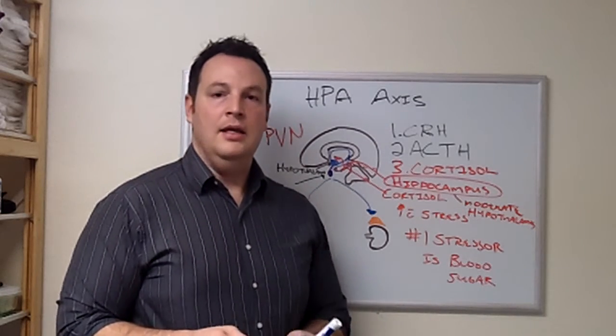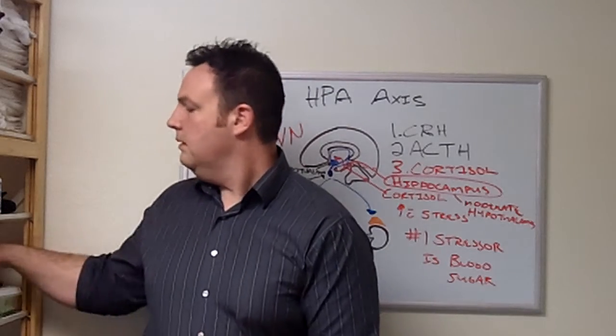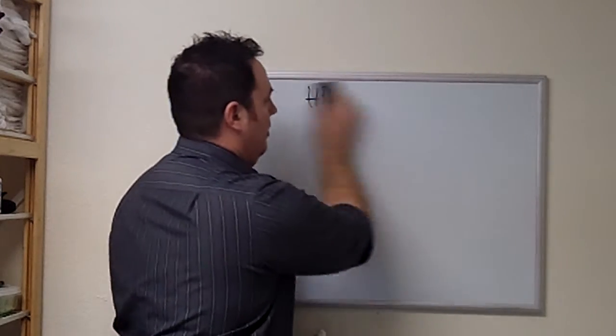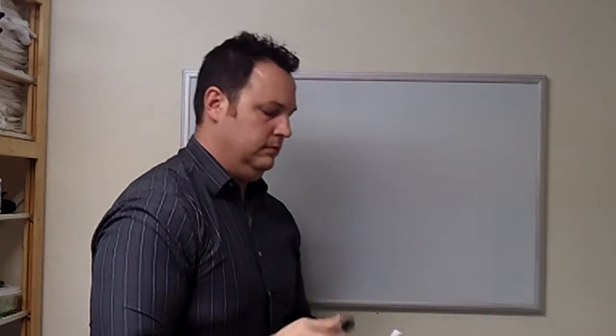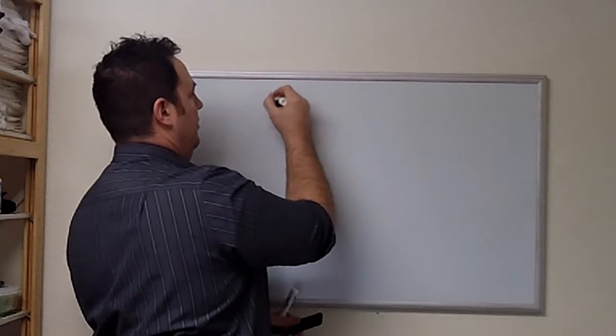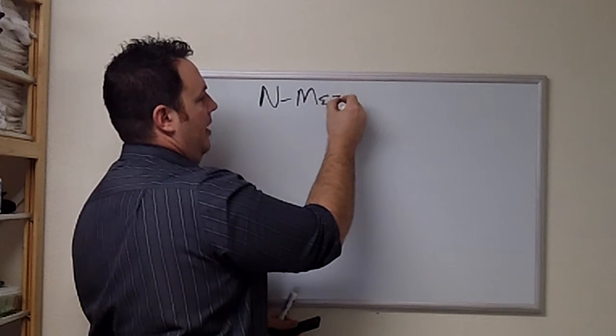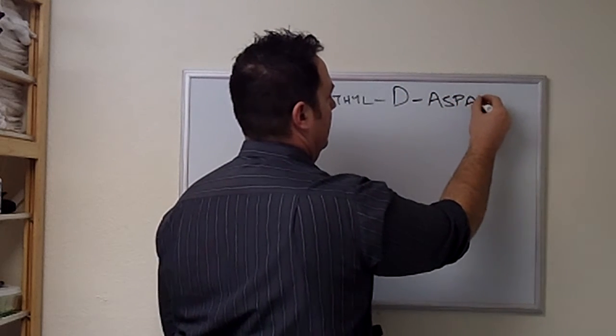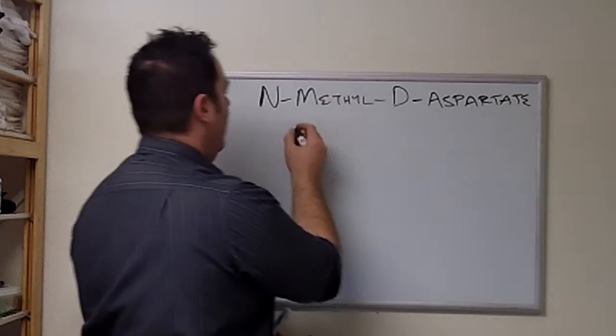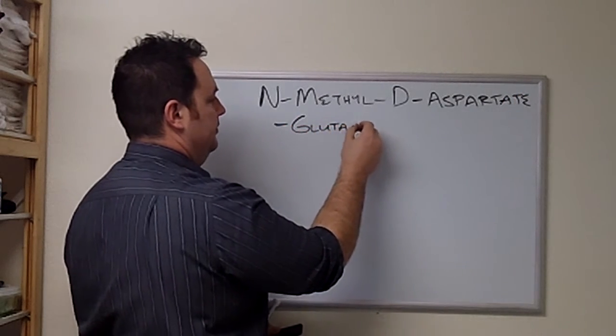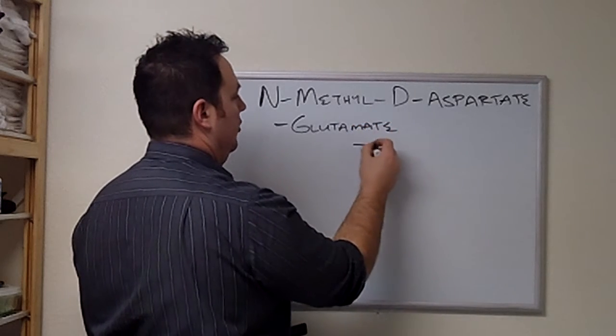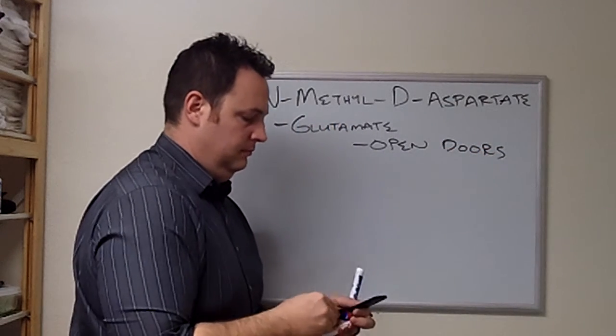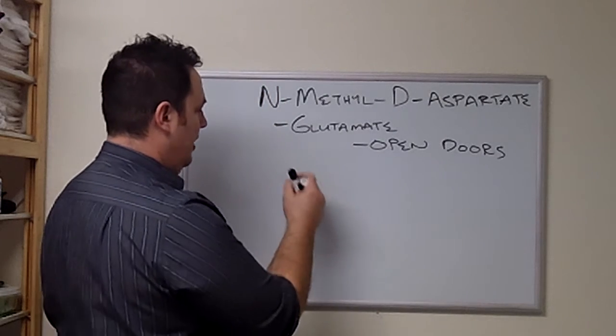Now I want to talk about the NMDA receptor. The NMDA receptor is all throughout the nervous system. NMDA, we have N-methyl-D-aspartate. This guy responds to glutamate. That's going to open the doors.